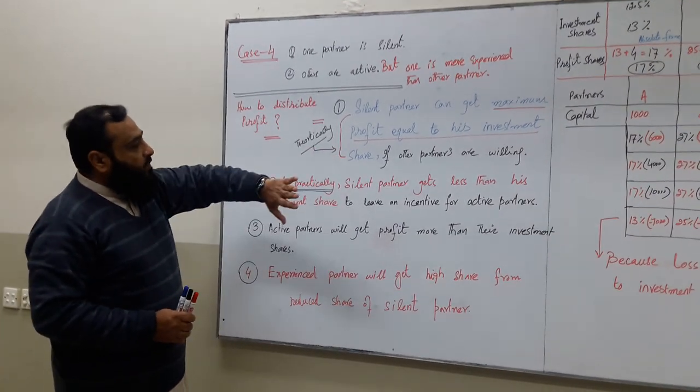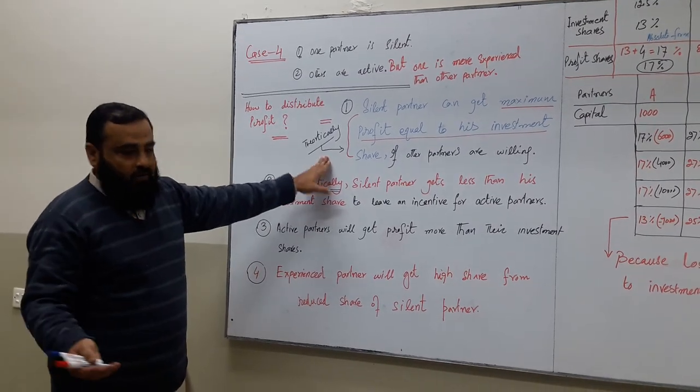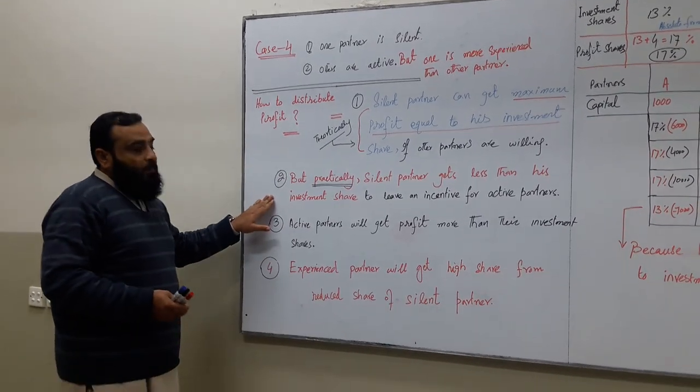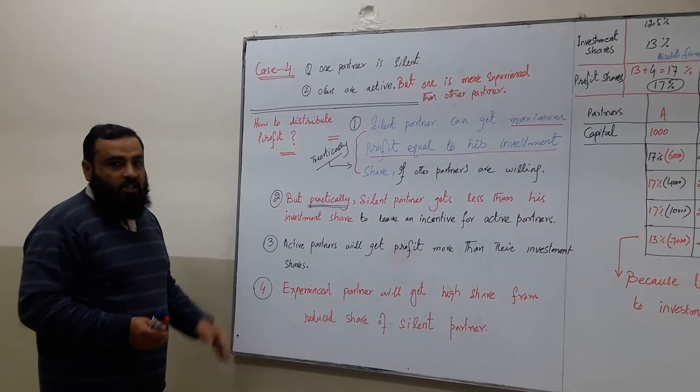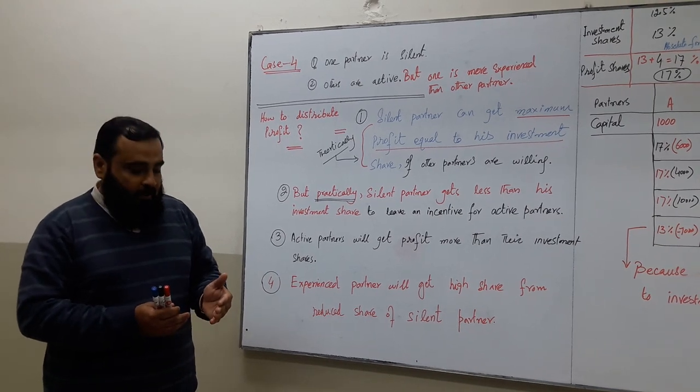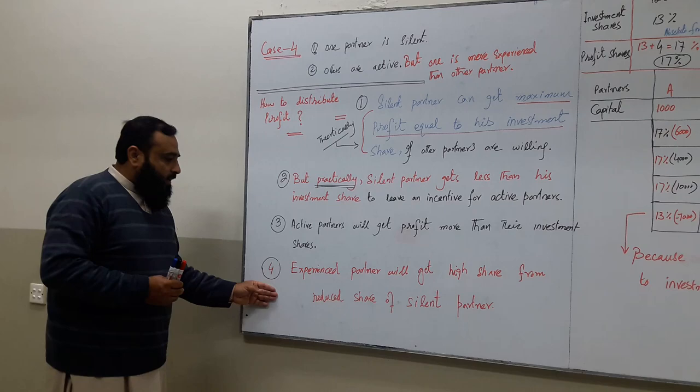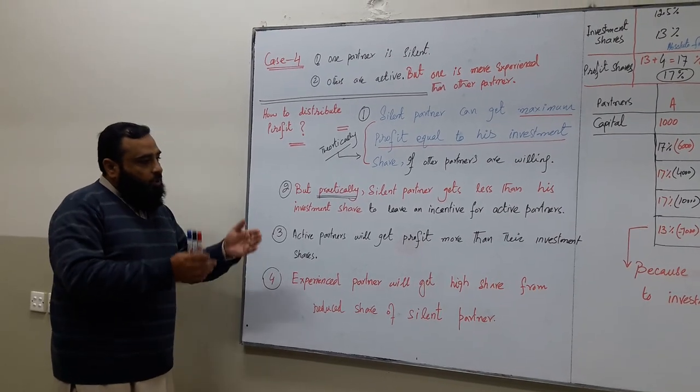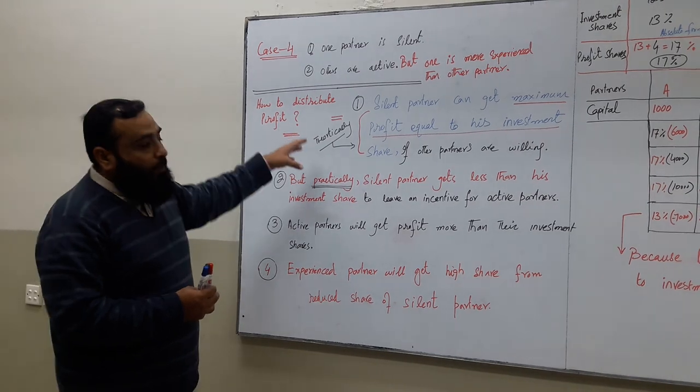Silent partner can maximum get equal to his investment share - that was theoretically as we discussed in the previous Case 3. But practically he will take less than his investment share, and he has to give up some portion of the profit as an incentive for the active partners.